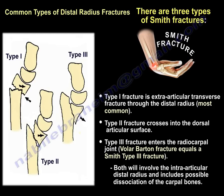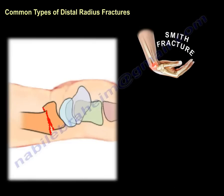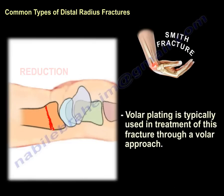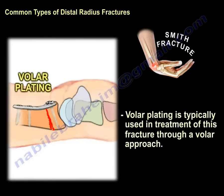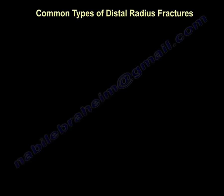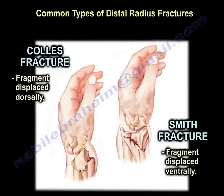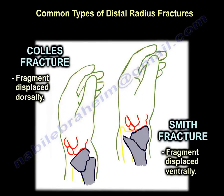Note the volar direction of the fragment. Both Smith Type 3 and volar Barton involve the intra-articular distal radius and may include dissociation of the carpal bones. A volar approach and plating to support this fragment is usually the treatment. The key difference between Colles' and Smith fractures is the direction of displacement: Colles' is dorsal, Smith is palmar or volar.